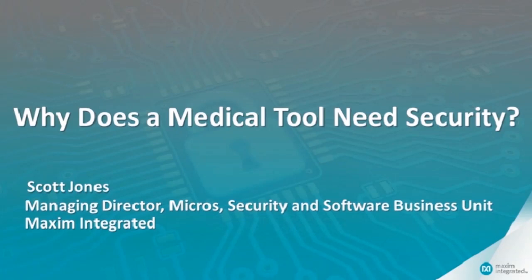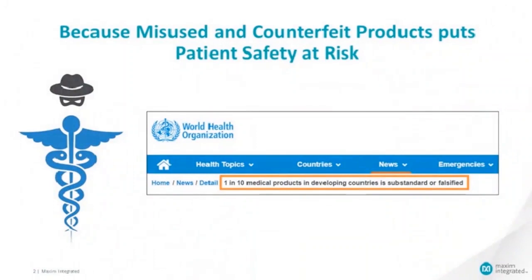The topic for today's session is why a medical tool, sensor, or other peripheral — such as cartridges or containers that might hold a pharmaceutical — would need security. The answer is fairly straightforward: these products are often misused. We see a statistic from the World Health Organization that one in ten medical devices in developing countries are either substandard or falsified. From other data, roughly 8% of the product in the supply chain can be counterfeit. What's not reported is that many products can be misused — for example, a device that has been used properly, disposed of, then harvested out of medical waste, cleaned up, and put back into the supply chain. Patient safety is a primary reason why we're thinking about security for these devices.